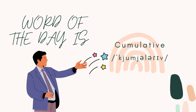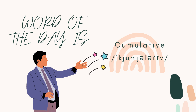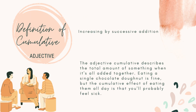Cumulative is an adjective. Definition of cumulative: increasing by successive addition. The adjective cumulative describes the total amount of something when it's all added together.